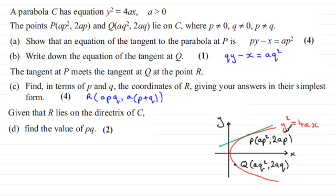And we've got these two tangents then. We'll draw the tangent in at Q. It's going to look something like that. And these two tangents intersect at this point R. And this point R is on the directrix.